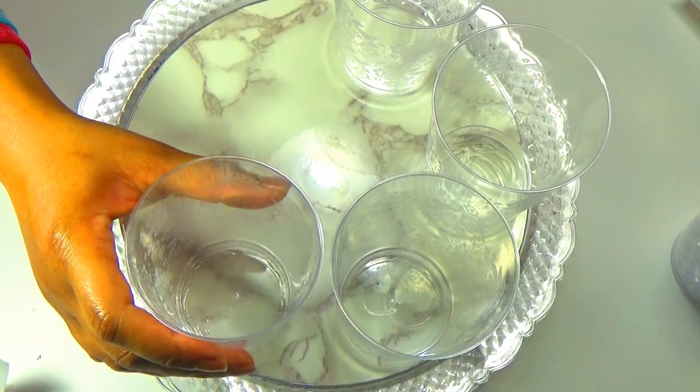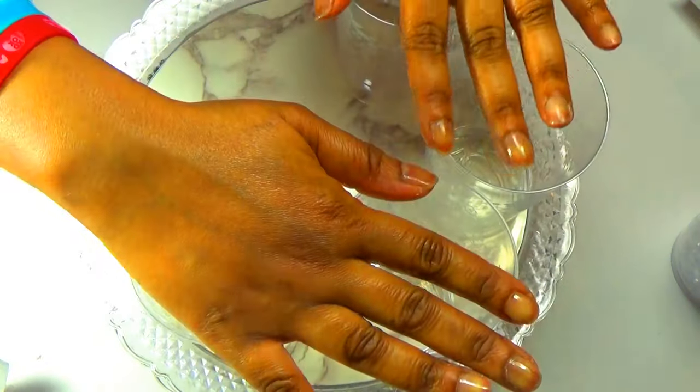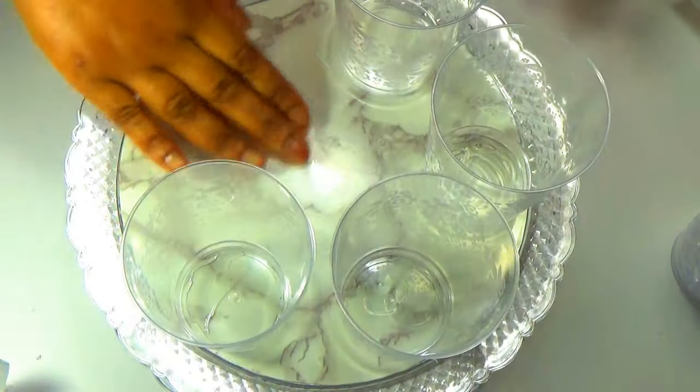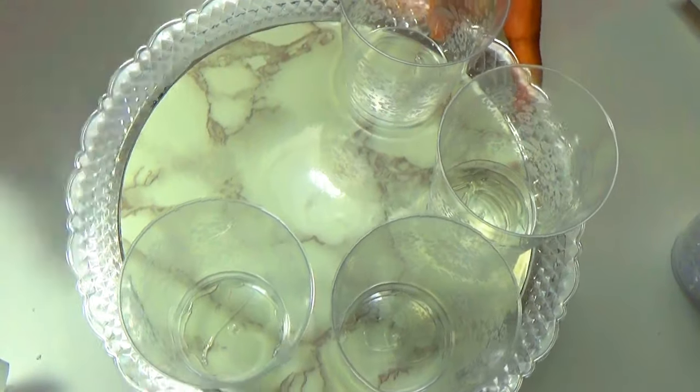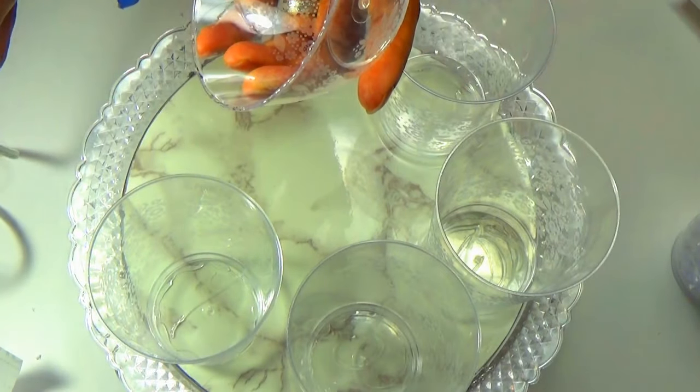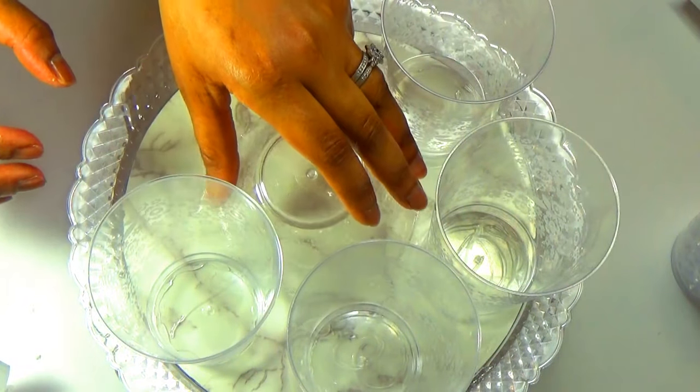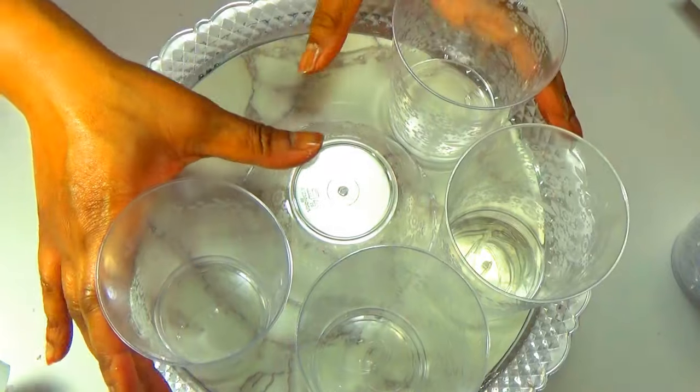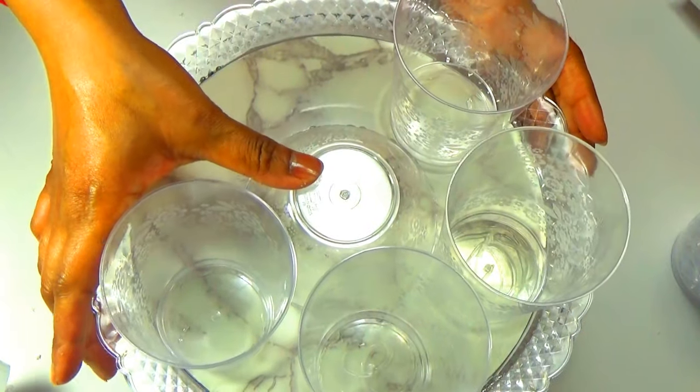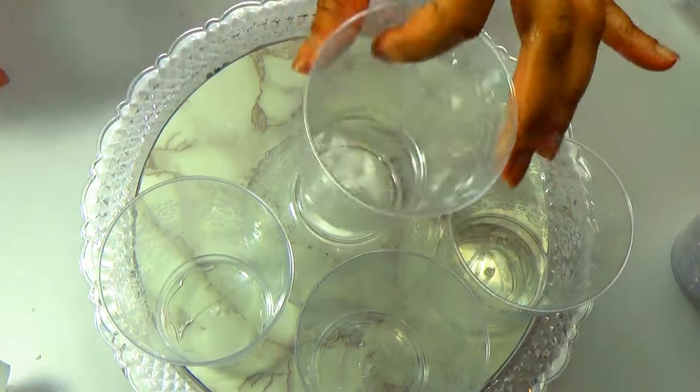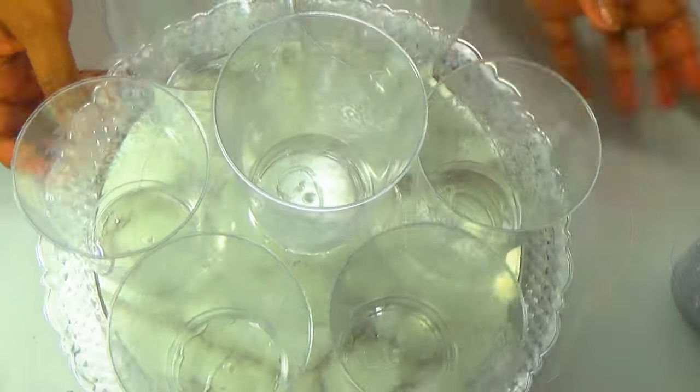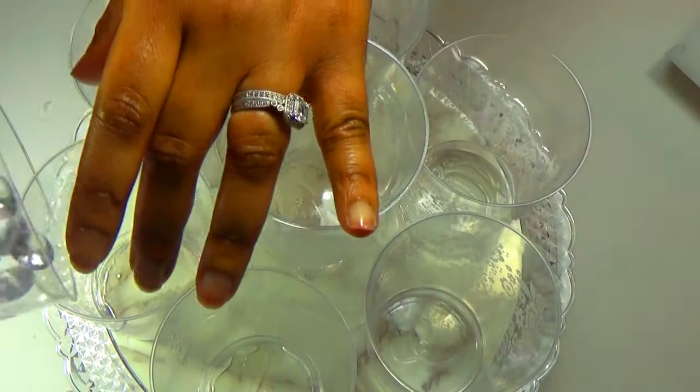Once I had everything glued on, it was time to add the little bowl to the middle portion of the cake stand so that I can have one cup that's higher than all the others at the center. So I just glued the rim of that little bowl, added it to the center, and then I glued on my cup to the back of that bowl.